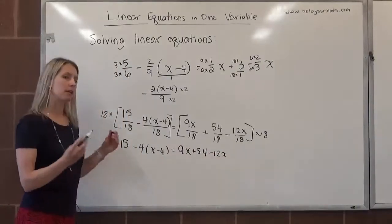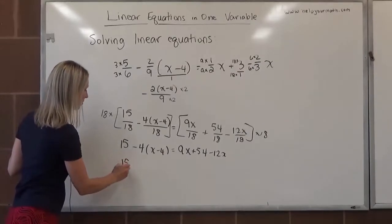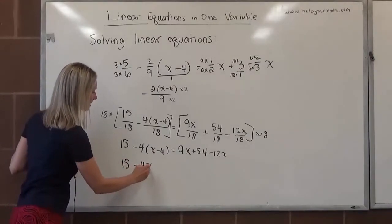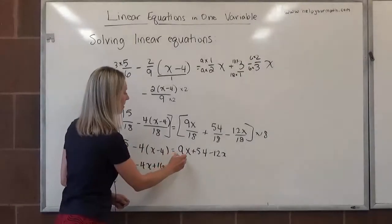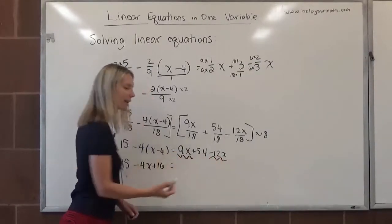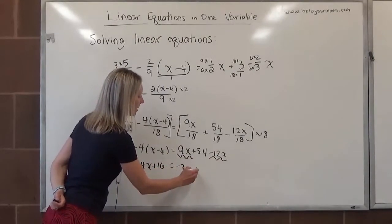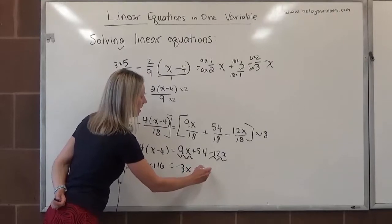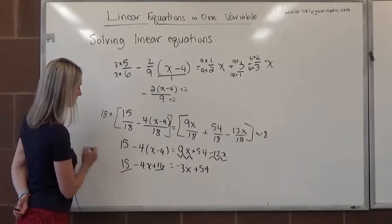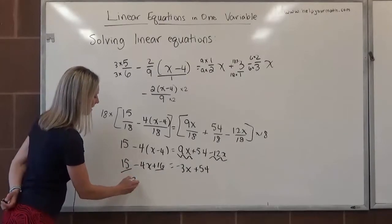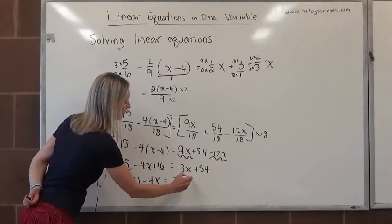From here, I want to clean up both sides separately. On the left-hand side I need to distribute, that would be 15 minus 4x plus 16. On the right-hand side, I see that I have some like terms, I have a 9x and a negative 12x. If I combine those that would be negative 3x, so we get negative 3x plus 54. I don't think we're done with the left-hand side yet, because we also have like terms here. We've got positive 16 and positive 15, that's 31 minus 4x equals negative 3x plus 54.